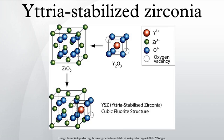The addition of yttria to pure zirconia replaces some of the Zr4+ ions in the zirconia lattice with Y3+ ions. This produces oxygen vacancies, as 3 O2- ions replace 4 O2- ions. It also permits yttrium stabilized zirconia to conduct O2- ions, provided there is sufficient vacancy site mobility, a property that increases with temperature. This ability to conduct O2- ions makes yttria stabilized zirconia well suited for use in solid oxide fuel cells, although it requires that they operate at high enough temperatures.